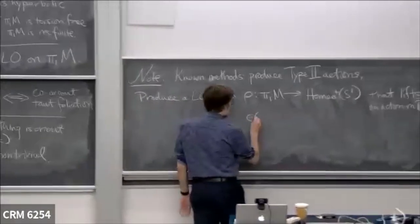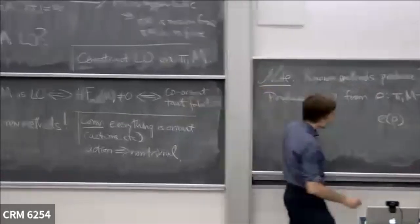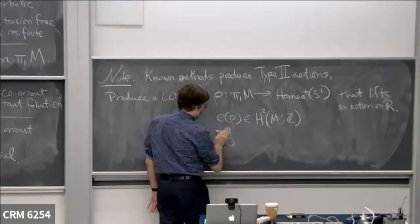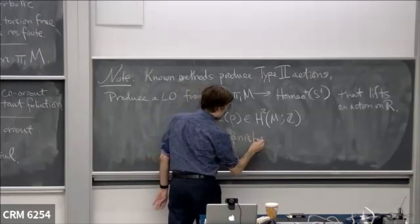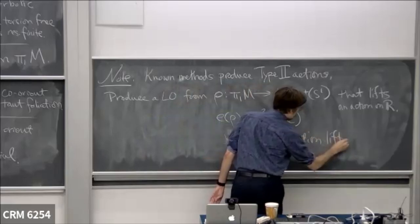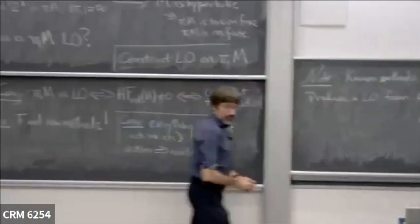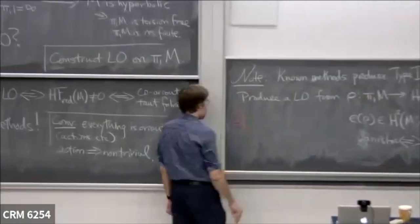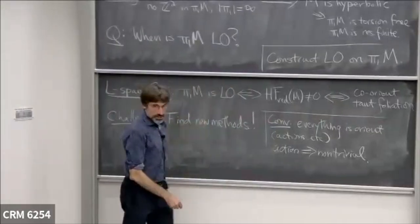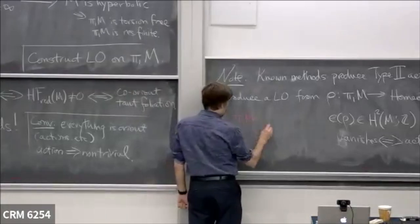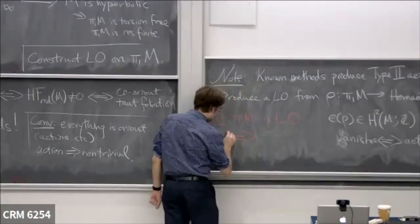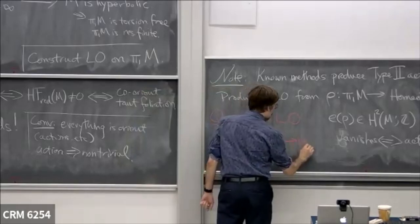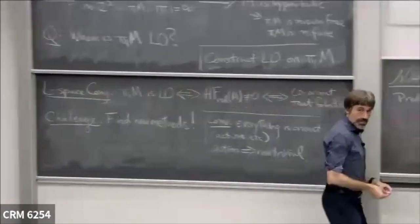This is of course a special class of these actions. Given such a homeomorphism, there's a cohomological obstruction to it lifting: the Euler class in H^2 of M with Z coefficients. This vanishes if and only if the action lifts. For all we know, one could ask if this conjecture could be strengthened: pi-1 of M is left orderable if and only if pi-1 of M embeds in this type of homeomorphism. As far as I know, this is conceivable.